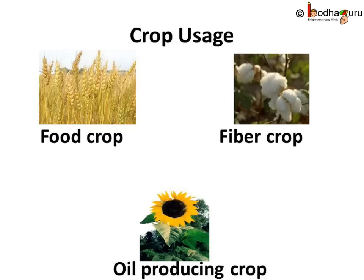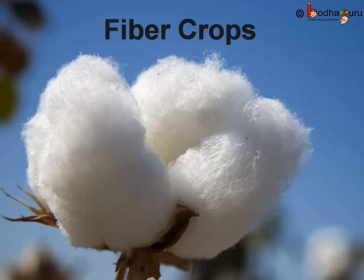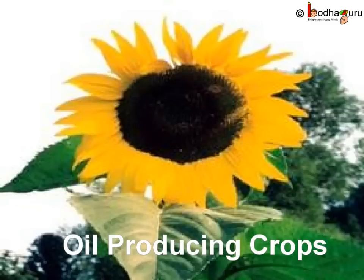We can divide crops into three groups based on usage: food crops like wheat, fiber crops like cotton, and oil-producing crops like sunflower.